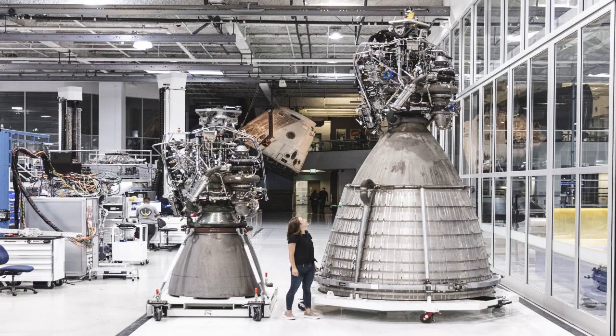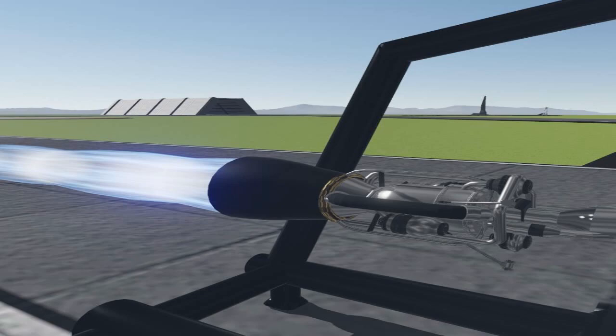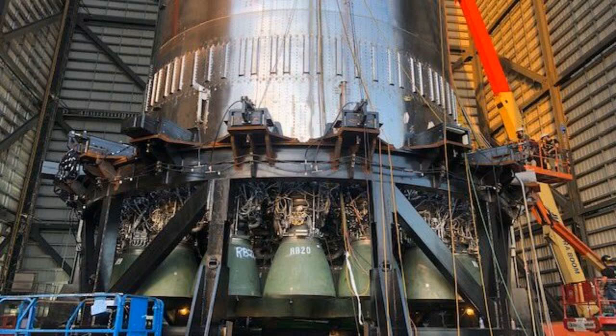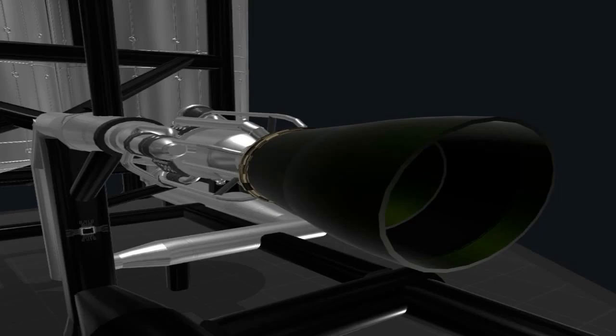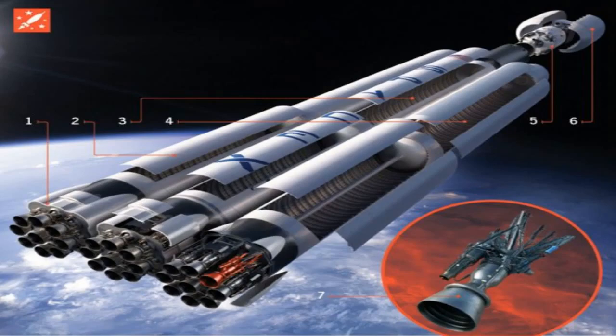The final step is to integrate the engine into the vehicle and prepare it for flight. This involves installing the engine into the Starship or Super Heavy stage and connecting it to the propellant tanks, avionics, guidance systems, landing legs, fins, flaps, and other components. The vehicle is then transported to the launch site and undergoes various checks and tests before liftoff.